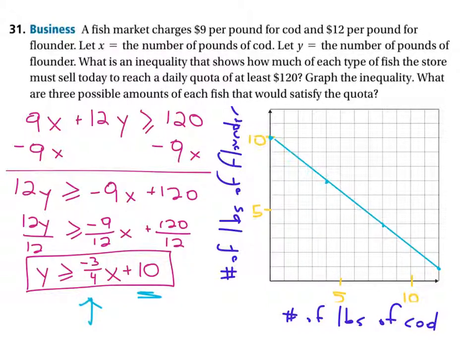I want to determine, do I want to include that line or do I need it to be a dotted line? So we examine over here, does it say our equals? It does say our equals. So the line should stay. It shouldn't be a dotted line. It should be solid.